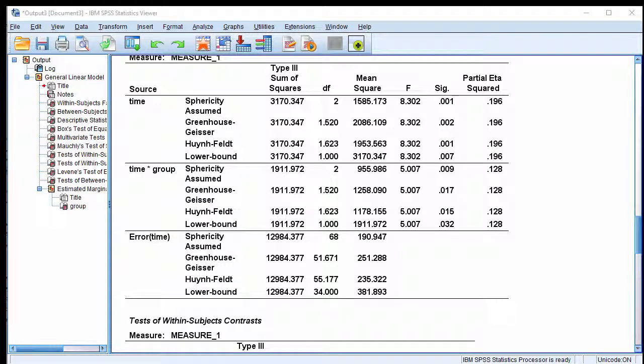In this video, I'm going to describe how to follow up a statistically significant omnibus interaction effect that has more than two levels associated with at least one of your independent variables.